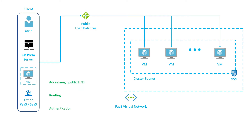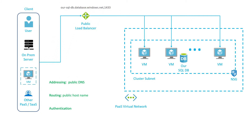Looking at the public version, addressing is through a public DNS — you receive a hostname and that's how you address your service. Routing is done with that hostname, which is important to understand. The PaaS cluster — which can have hundreds of VMs — has one public IP but multiple hostnames. The service uses the hostname in the request to route it to the proper VM at the right port to access your workload. Authentication is done with service authentication or Azure AD, depending on the service and mode you're using.